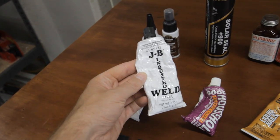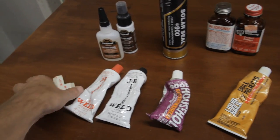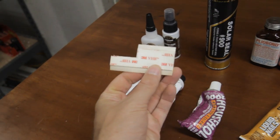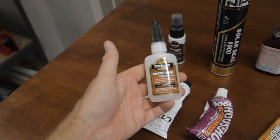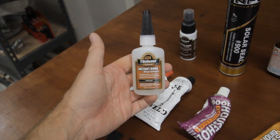JB Weld is pretty good. Some 3M VHB double sided tape. Some CA glue, also known as super glue.